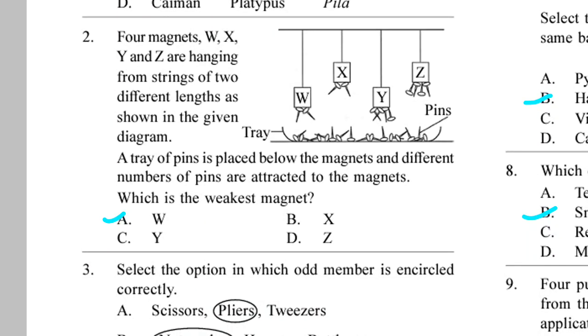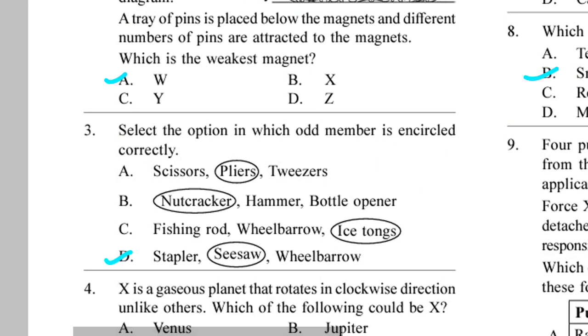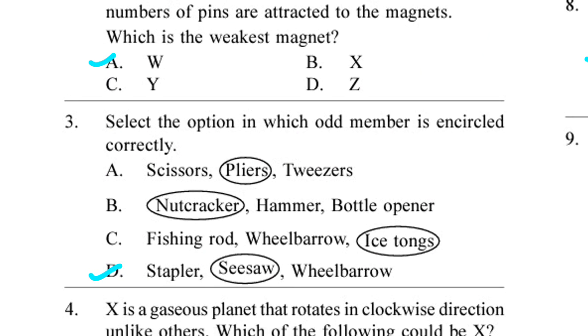Question 3. Select the option in which odd member is encircled correctly. Look at the options. Answer is option D.